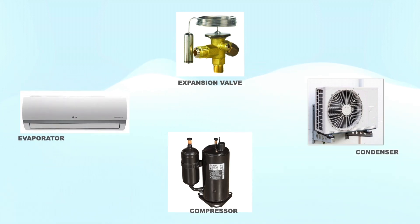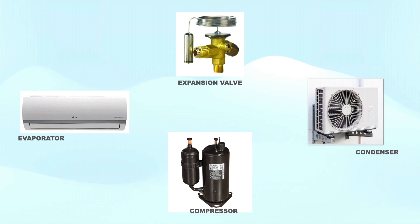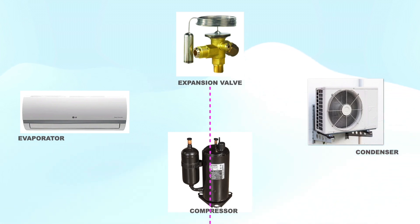Please take note that the refrigeration system is a closed-loop system, which means that the refrigerant is contained inside these components. And once you have a sudden drop in your pressures, it means that you have a leak in the system. The easiest way to understand the refrigeration cycle is by dividing these components into four areas.